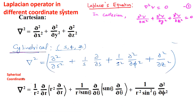The Laplacian operator is denoted as del squared. In Cartesian coordinates, del squared is the second-order partial differential operator: del squared by delta x squared plus del squared by delta y squared plus del squared by delta z squared. In cylindrical coordinates, where S, phi, Z are the coordinate variables, del squared is: del squared by delta S squared plus (1/S)(delta/delta S) plus (1/S squared)(delta squared/delta phi squared) plus delta squared by delta Z squared.